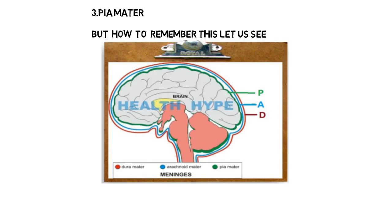Friends, now we have 3 letters: P, A, D. If you read from the top, you will get a meaningful word — PAD. Friends, if you remember this word PAD, you can remember all 3 layers of the brain.